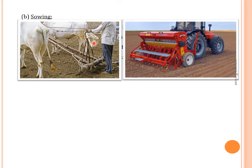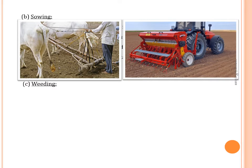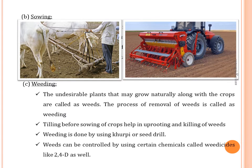The traditional tool is a funnel with three prongs. The second tool is a seed drill — it plants seeds at equal distance and equal depth. Nowadays we use a seed drill for sowing. The next question is weeding: undesirable plants that grow along with the crops are called weeds, and the process of their removal is called weeding.